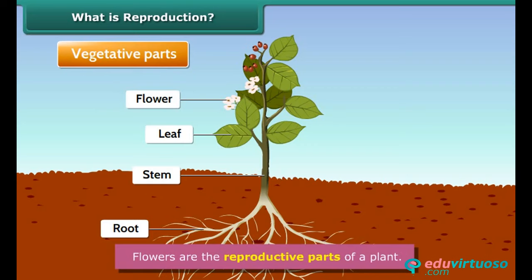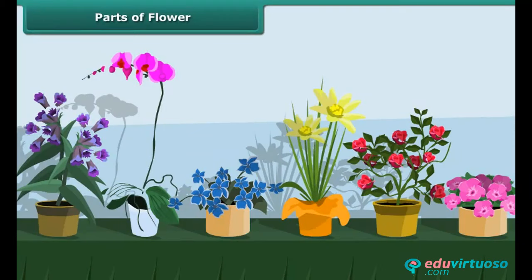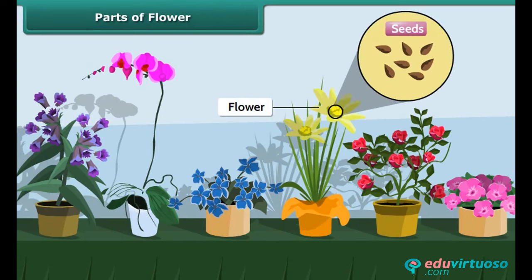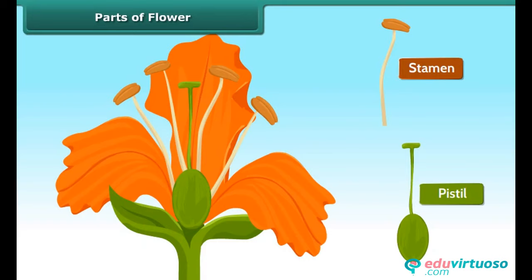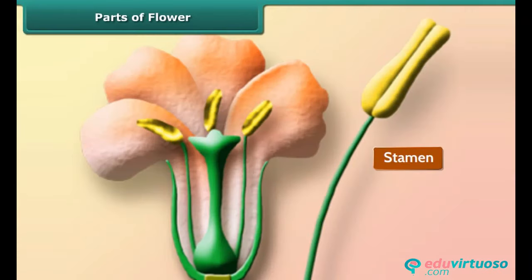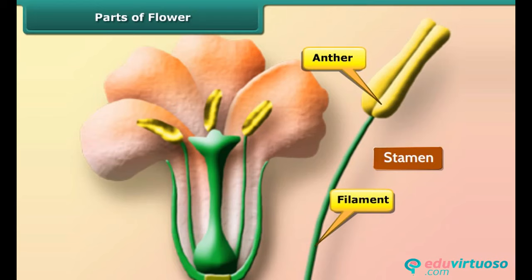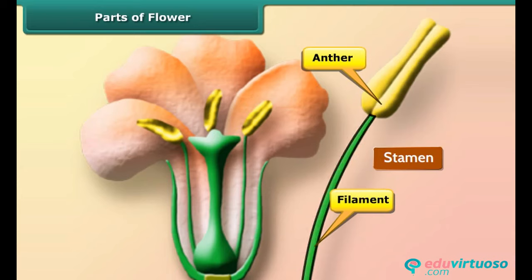But before studying the reproduction in plants, let's recall the parts of a flower. Flowers are the beautiful parts of a plant. They are important in making seeds, therefore they are the reproductive parts of a plant. Let's learn about their parts. Stamen is the male part of a flower, and pistil is the female part of the flower.